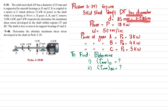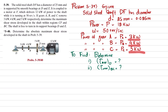The diameter of the shaft is 25mm. The total power of the motor is 12kW. Angular velocity is 50 revolutions per second. Power at gear A is 3kW, at B is 4kW, and at C is 5kW. We need to find maximum shear stress in regions CF and BC.